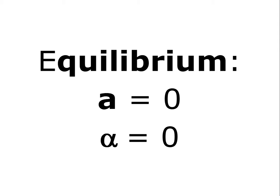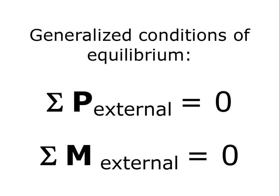We're going to say the translational acceleration is zero and the angular acceleration is zero. So the generalized conditions of equilibrium are that the sum of all the external forces is equal to zero, because we don't want the object or the building to accelerate. Likewise, the sum of all the external moments has to be zero, because we don't want the building to start rotating.